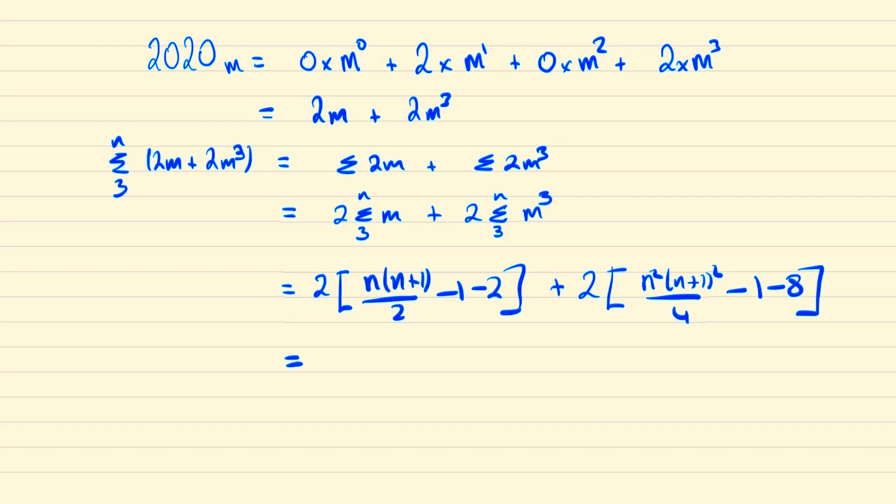Simplifying this down becomes n times n plus 1 minus 6 plus n times n squared times n plus 1 squared all over 2 minus 18. And then simplifying this once more we have the following.